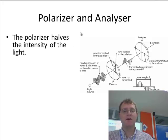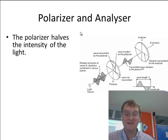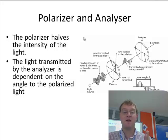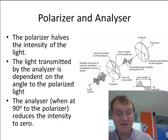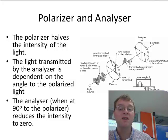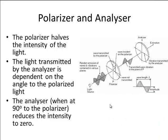The polarizer, by definition of only letting light through in one direction, immediately halves the intensity of the light. So from unpolarized to polarized light, we immediately halve the intensity. The light transmitted by the analyzer is completely dependent on the angle to the polarized light — the angle the polarizer makes with respect to the direction in which the light is oscillating. If the analyzer is at 90 degrees to the polarizer, it reduces the intensity down to zero.